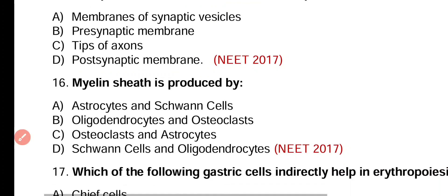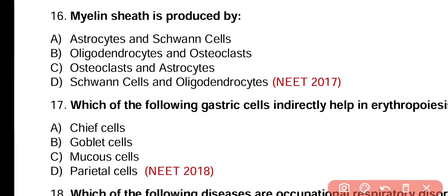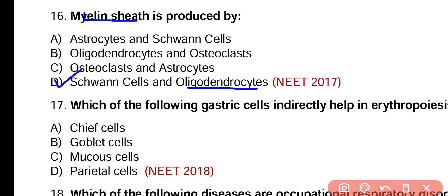Question number 16. Myelin sheath is produced by: astrocytes and Schwann cells, oligodendrocytes and osteoclasts, osteoclasts and astrocytes, or Schwann cells and oligodendrocytes? Correct answer is option D. Myelin sheath in the central nervous system is produced by oligodendrocytes, while in the peripheral nervous system it is produced by Schwann cells.